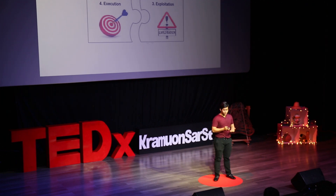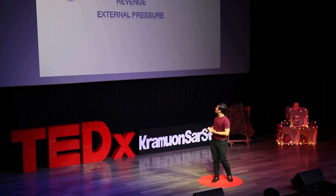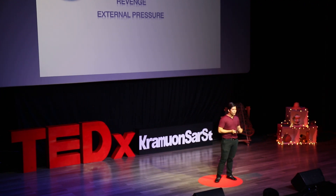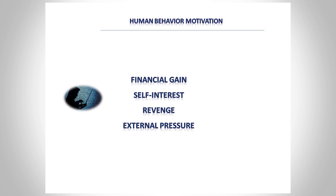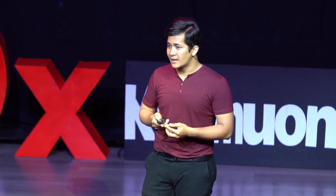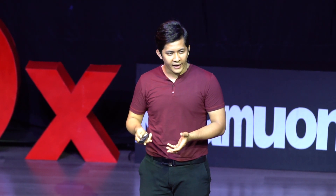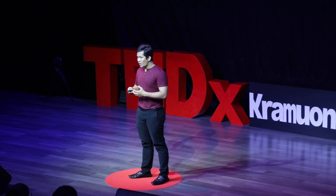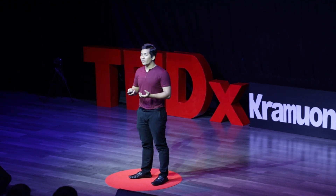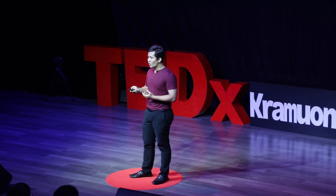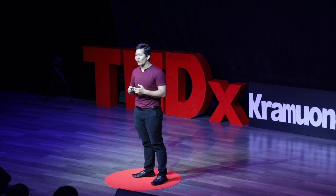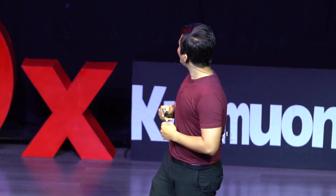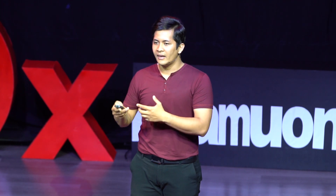What motivates attackers to carry out social engineering attacks? The first motivation is financial gain — the transfer of money. Or you may want to access or modify information associated with your family or friends as self-interest, or to satisfy an emotional desire or revenge, targeting your friends, colleagues, or your workplace. The last motivation is external pressure — pressure from friends or family that makes you organize or join a criminal syndicate.